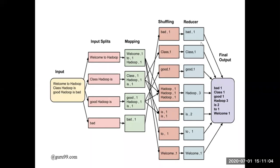The result of shuffling is given to the reducer. The reducer takes all the outputs from shuffling and combines them into a single final output. For example, hadoop comma one, hadoop comma one, hadoop comma one is compressed to hadoop three. East comma one and east comma one becomes east comma two. That is how the reducer gives the final output.